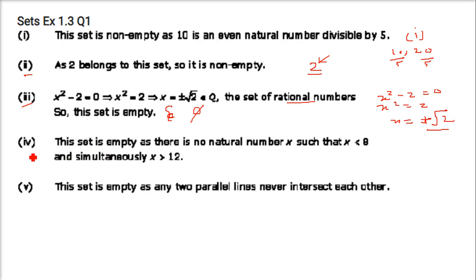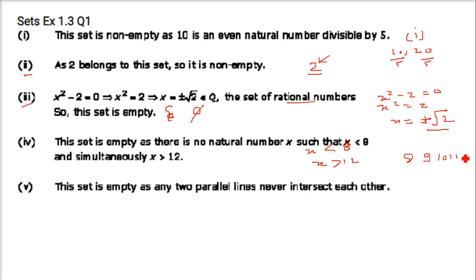Next one is x such that x is a natural number, x is less than 8, and simultaneously x is greater than 12. Is it possible? Any number has to be below 8 and above 12 at the same time, which is not possible. So this will be an empty set.